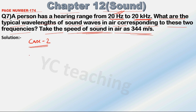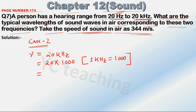What is our second frequency? Nu is equal to 20 kHz. We need to convert it to Hz. We know 1 kHz equals 1000 Hz, so it will be 20 into 1000, that is 20,000 Hz. And the speed of sound, v, is equal to 344 meters per second.